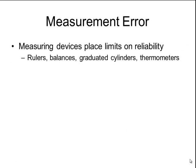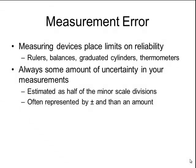When measuring in a chemistry class we commonly use tools like rulers, balances, graduated cylinders, and thermometers. Those measuring devices place limits on how reliable our measurements are. There is always going to be some amount of uncertainty in our measurements. When one student reads a graduated cylinder they might not read the exact same measurement as another student — they might have slightly different measurements.